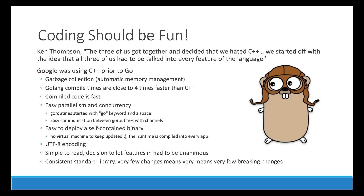Golang compile times are close to four times faster than C++, which is a big plus as you get into bigger projects, and the compiled code for Golang is fast. When it comes to parallelism, Golang was created when we already had multi-core processors, so this was a design choice from the very beginning, making it very easy to use. With goroutines we just put the keyword 'go' with a space in front of a function to fire up a goroutine, and communication between goroutines is very easy with channels. It's also very easy to deploy — we have a self-contained binary, so there's no virtual machine that needs to be kept updated; the runtime is compiled into every app.